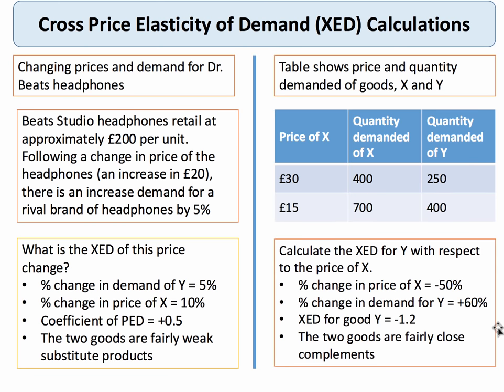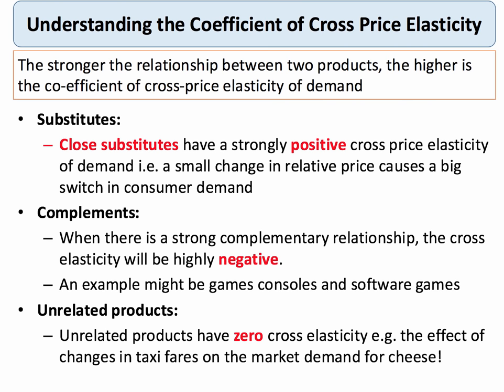Here's another example. This table shows two goods X and Y. We see the price of X falling from £30 to £15. People buy more of X, but they also buy more of Y, which suggests these two products are complements. There's been a 50% reduction in the price of X, leading to a 60% increase in the quantity demanded of Y. Putting the numbers into the formula gives us minus 1.2, suggesting these two goods are fairly close complements.